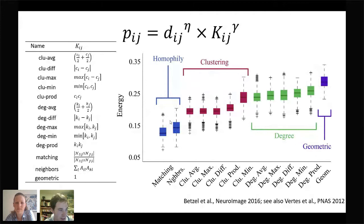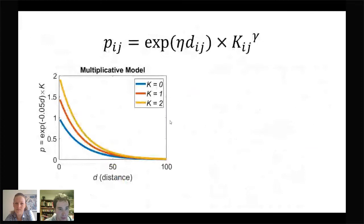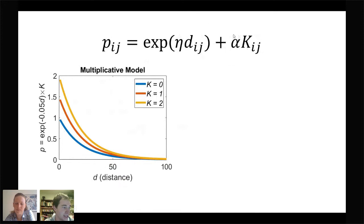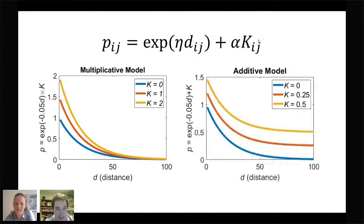There are issues with how these models are formulated. The multiplicative trade-off formulation distributes effects unevenly across distance — short-range connections benefit more from increasing topological values than long-range connections — so topology cannot truly overcome distance effects. We therefore changed to an additive formulation with an alpha parameter that controls as a trade-off how much influence the topological term has. Under this formulation, the effects of topology can be more evenly distributed across distance.